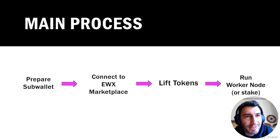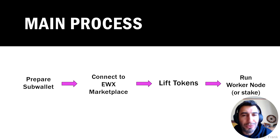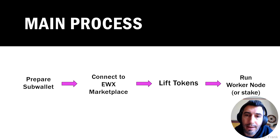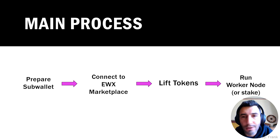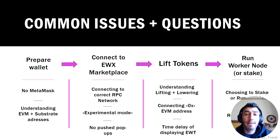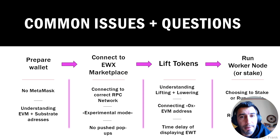So some of the steps you need to make sure you have down: you do have your substrate wallet, or a wallet available to be linked. Make sure you have both your substrate and your EVM wallet linked to that so you are good to go. Then we'll go through the step of connecting to the Marketplace, then how we lift the tokens and how we run a node. Most of the things I'm going to be focusing on are the common issues and questions coming up from the community.